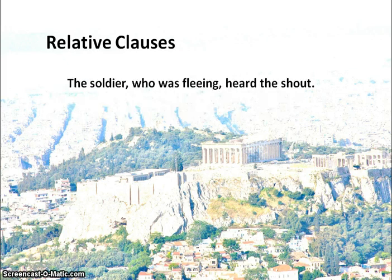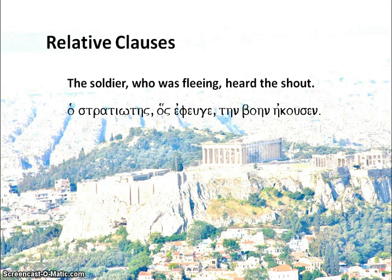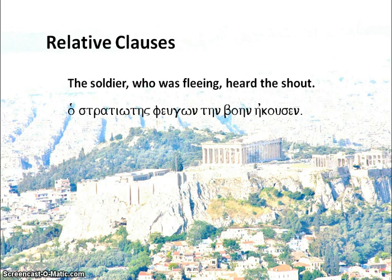For example: 'The soldier who was fleeing heard the shout' could be expressed as a relative clause: ho stratiotes, hos epheugen, tēn boēn ēkousen — 'hos' there is masculine and singular because it is agreeing with stratiotes, and here it just happens to also be nominative. However, Greek is much more likely to just use a present participle: ho stratiotes, pheugōn, tēn boēn ēkousen — 'the soldier, while fleeing, heard the shout' — where pheugōn is simply the present active participle.